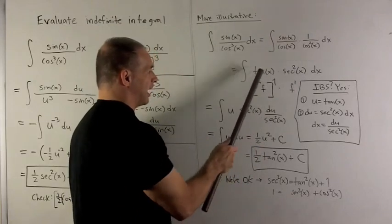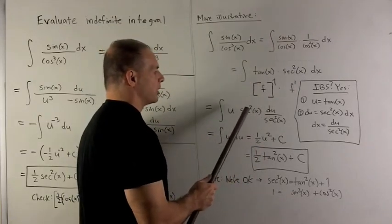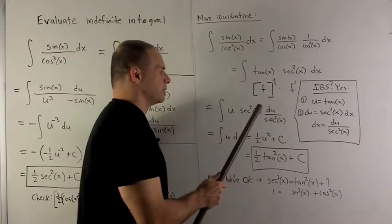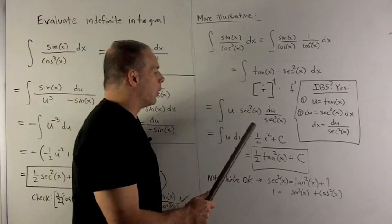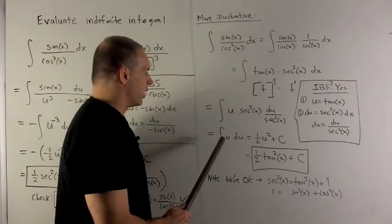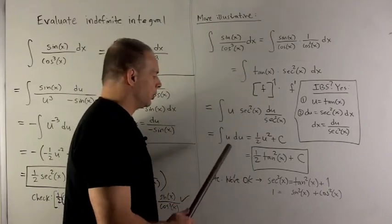Tan x becomes u, secant squared stays where it is, and then dx becomes du over secant squared x. The secant squareds go away, and I wind up with integral of u du.